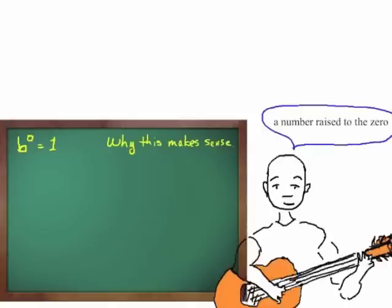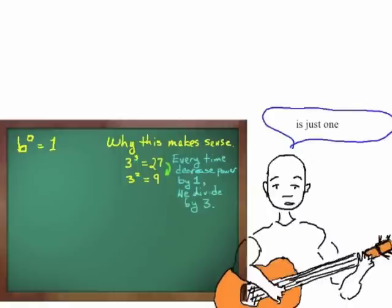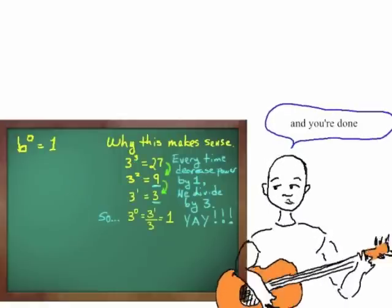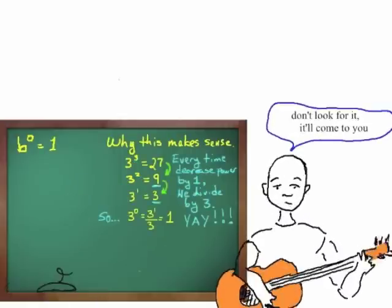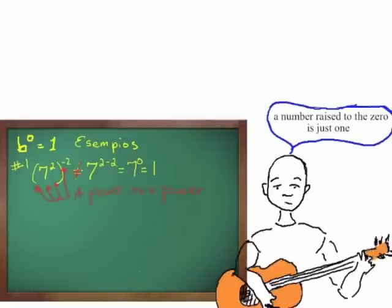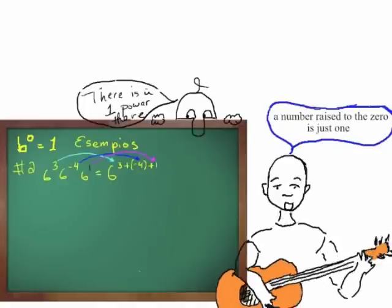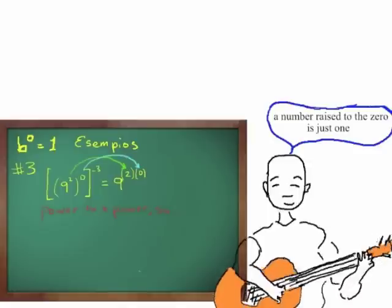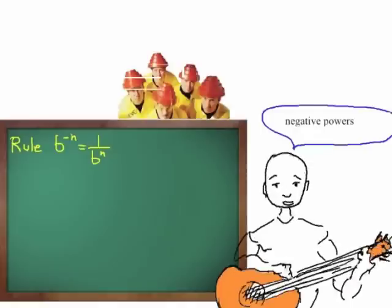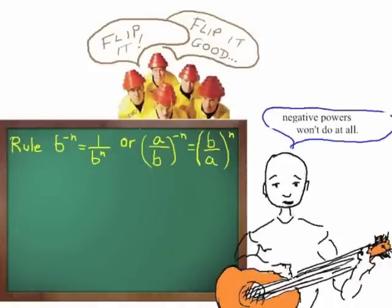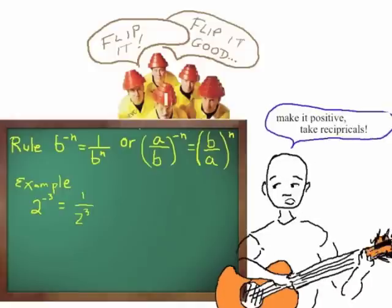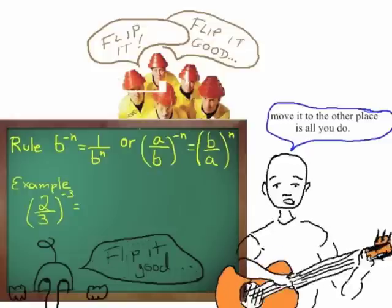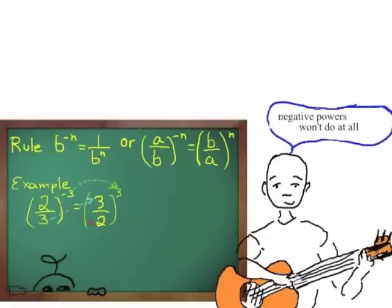A number raised to zero is just one — super simple and you're done, don't look for it, it'll come to you. Negative powers won't do at all — make it positive, take reciprocals, move it to the other place is all you do. Negative powers won't do at all.